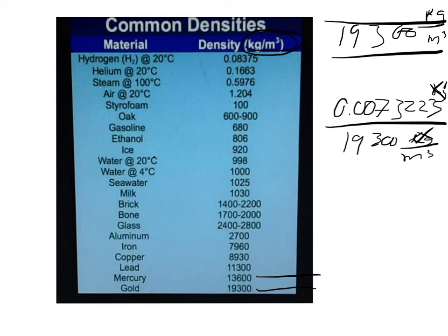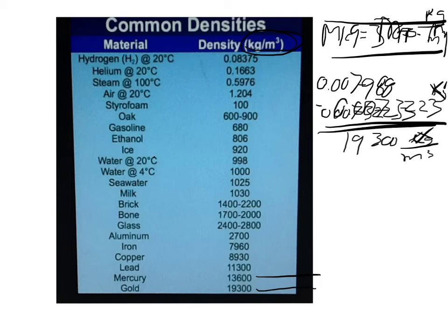Now, in order to find the volume of copper, we actually have to find out how much copper was there, so the amount of copper, the mass of copper is equal to the total mass, so the total mass minus the mass of gold. And so, we said that the total mass was 0.007988, and the mass of gold was 0.00773223, and so we could subtract that and find the mass of the copper.